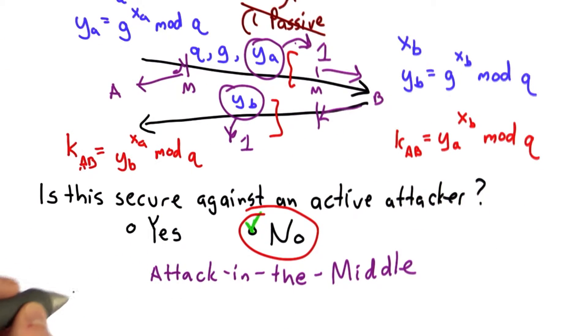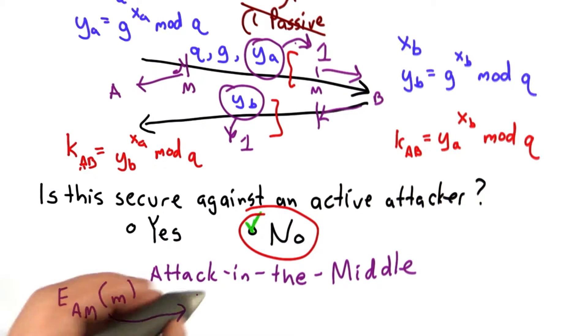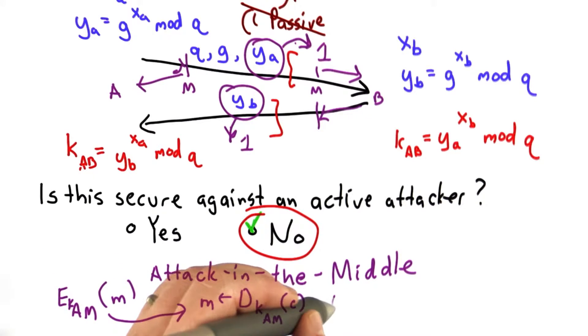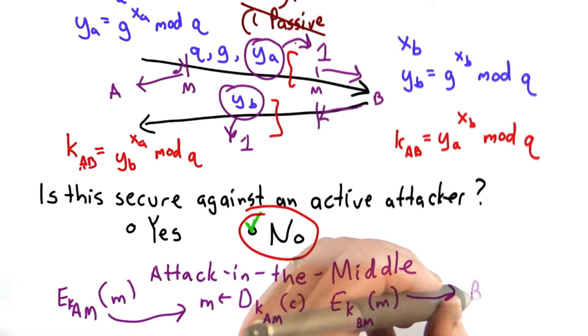And that means the attacker in the middle could take a message that Alice encrypts with this key that's actually shared with the attacker in the middle, can decrypt that message, can then re-encrypt that message using the key that the attacker shared with Bob, and send the result to Bob. Bob will decrypt it thinking it's a good message from Alice. So this is a very dangerous attack.